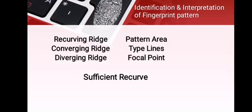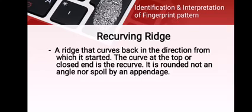There are seven identification and interpretation elements of fingerprint patterns: the recurving ridge, converging ridge, diverging ridge, pattern area, type lines, focal point, and the sufficient recurve.